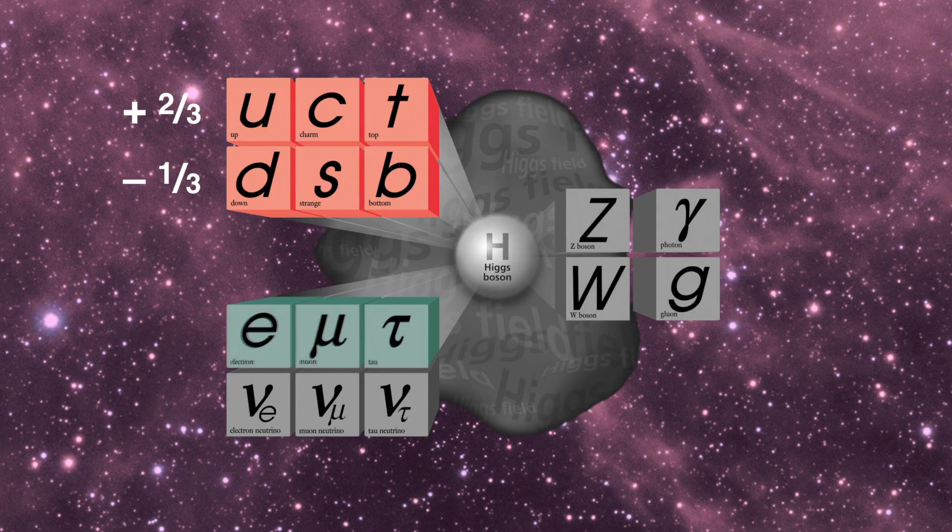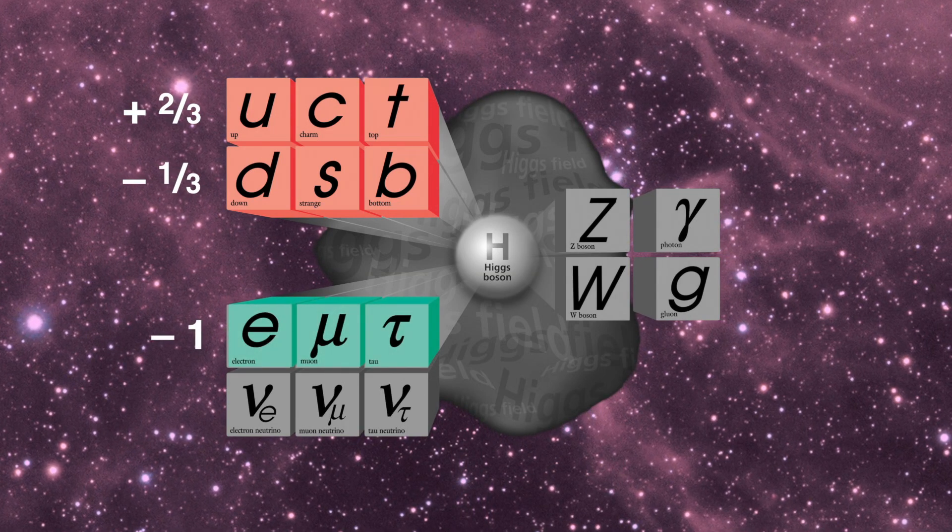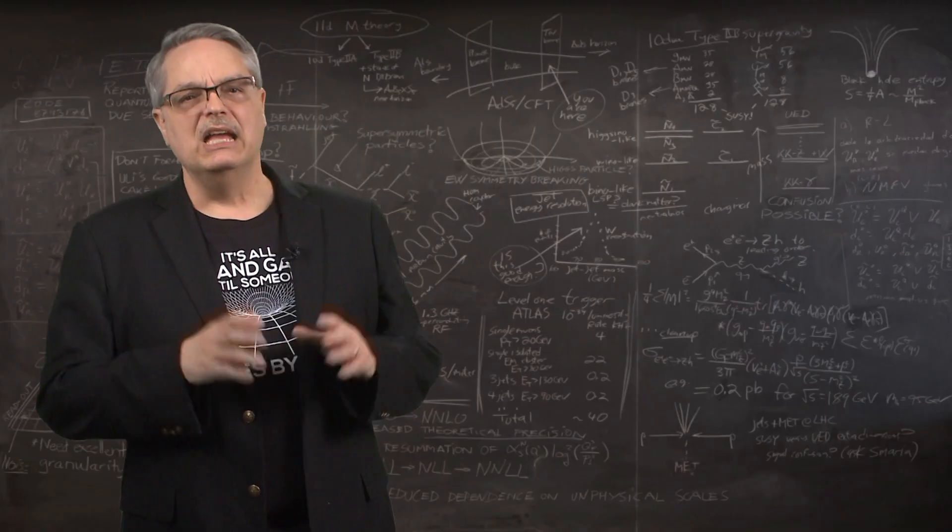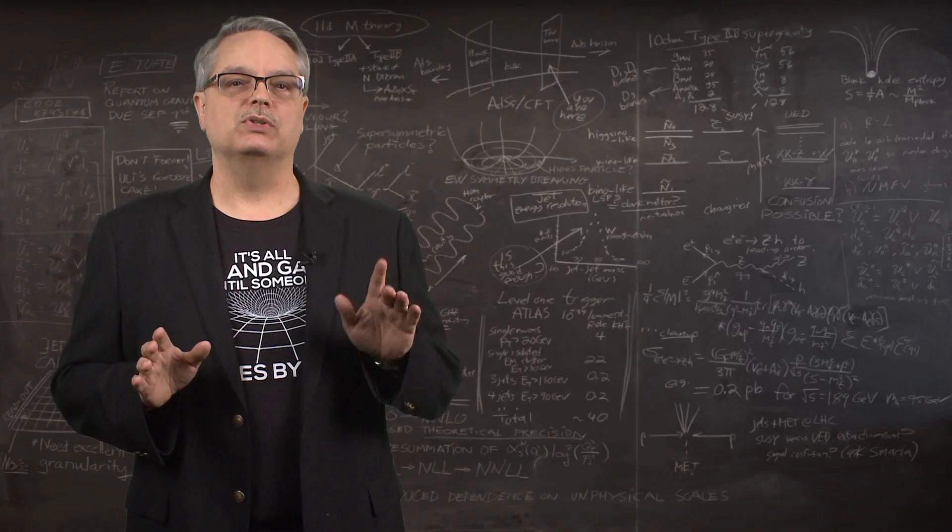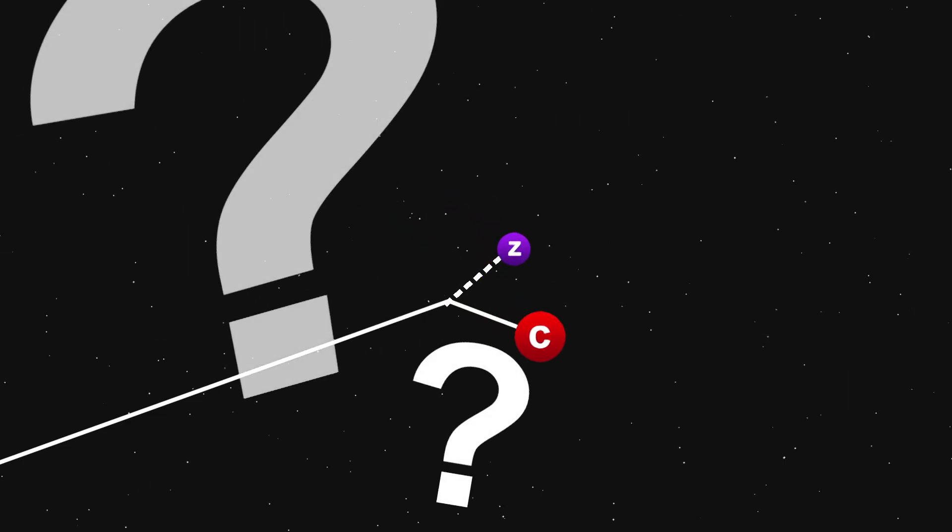The three leptons, the tauon, the muon, and the electron all have a charge of minus one. I already said that the interaction in which the top quark emits a Z boson and stays a top quark is okay. And this is true for all of the other particles as well. But what about a case like having a top quark emit a Z boson and become a charm quark? That seems like it would be possible, but is it?